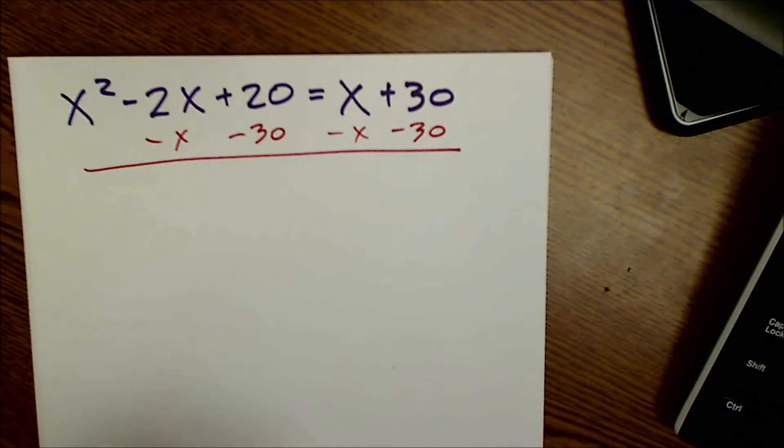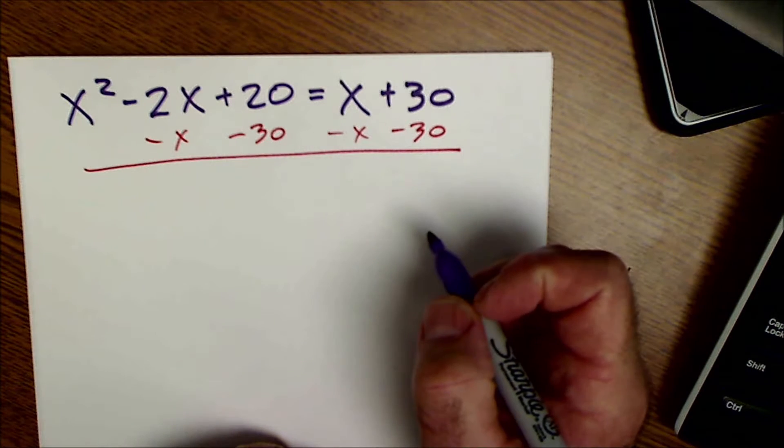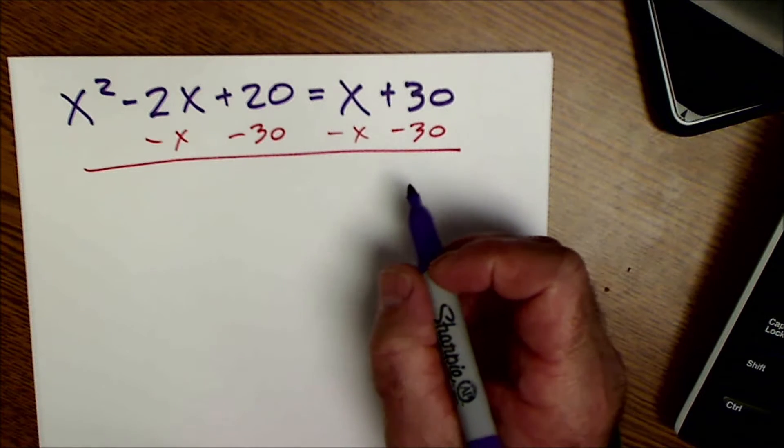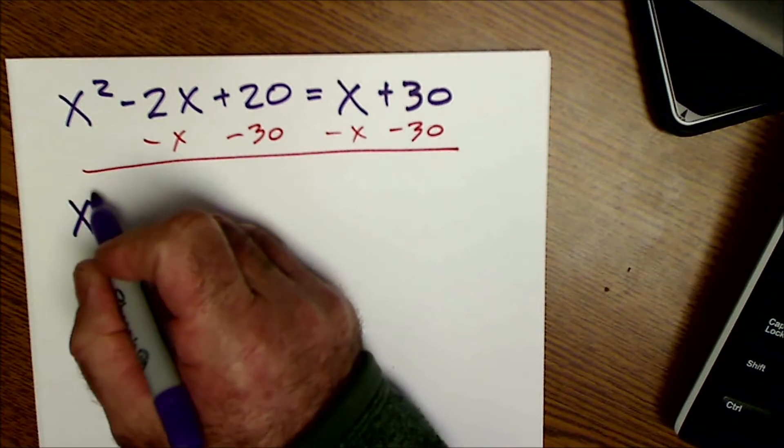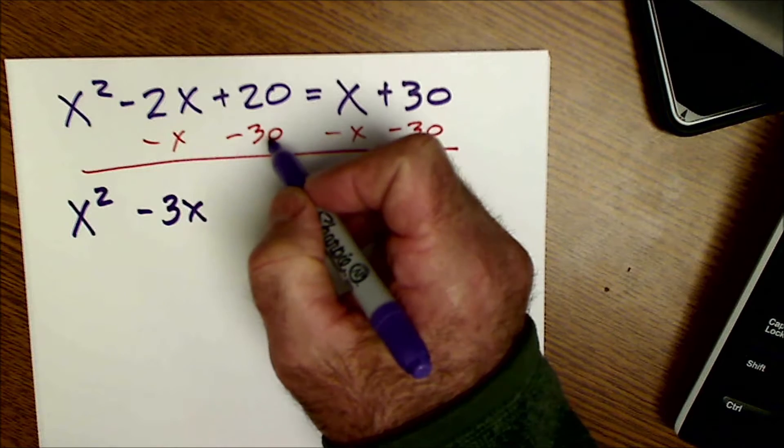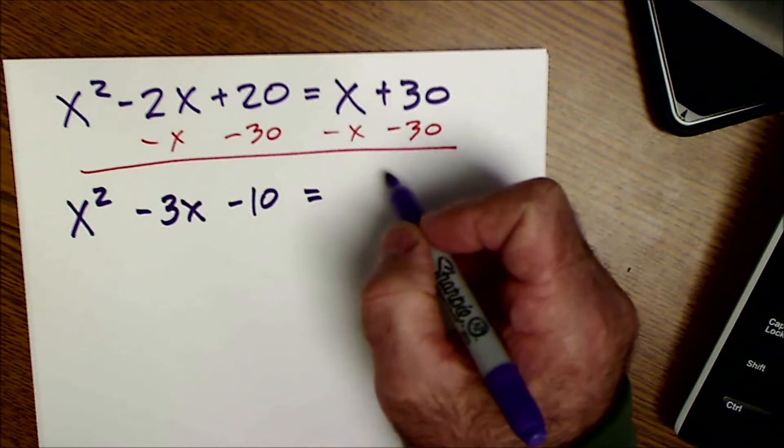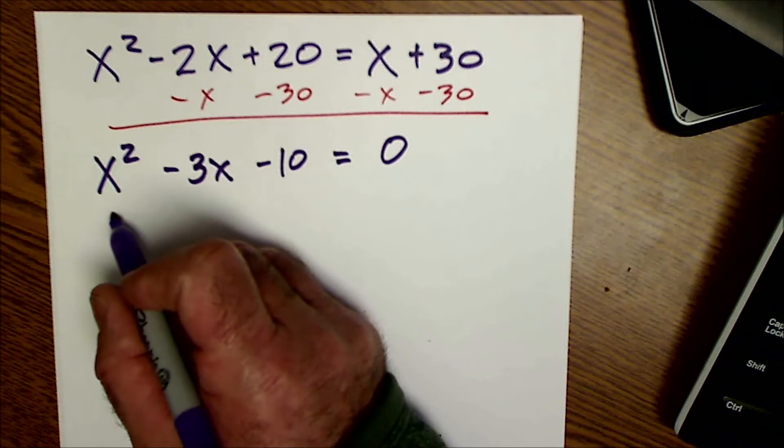And the whole reason I'm doing that is to set it equal to zero because there are two roots for every quadratic. And they are when the y value is equal to zero, it's going to cross the x-axis. So this gives me x squared minus 3x. 20 minus 30 is negative 10. And that's equal to zero.